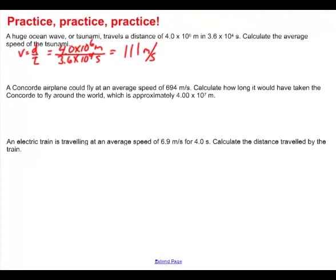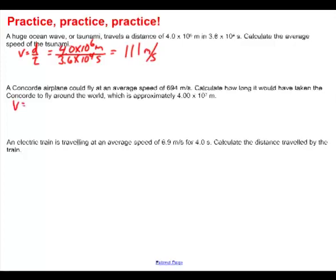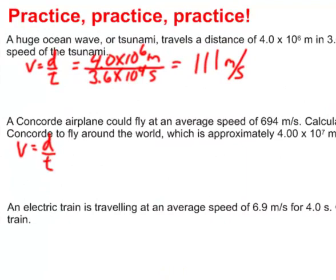A Concorde airplane could fly at an average speed of 694 meters per second. Calculate how long it would have taken the Concorde to fly around the world, which is approximately 4.00 times 10 to the 7th meters around the world. Well, the basic equation once again is velocity is equal to distance divided by time.